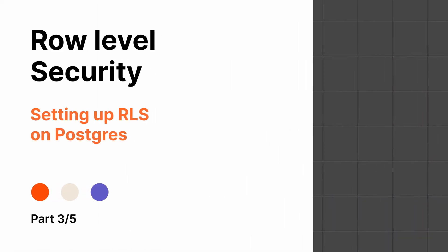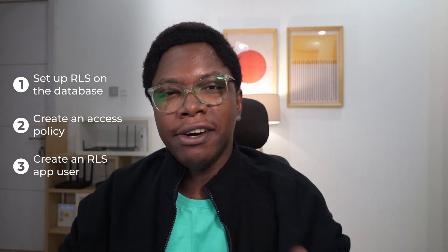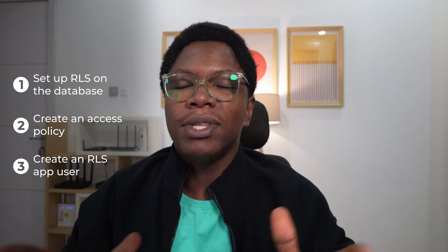Hey guys, welcome back to the multi-tenant RLS auth video series. In the last video, we took a look at how to build the form UI for the sign-in and sign-on workflow, including how to hash passwords and create sessions. In today's video, we'll be focusing on the database side — specifically, setting up RLS on the database, creating an access policy using that RLS, and creating an app user to which the RLS policy will be applied. My name is Confidence and I'm a developer advocate at AppSmith. Let's get started.